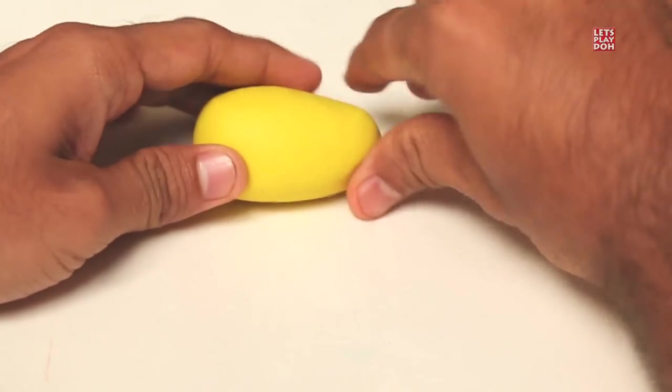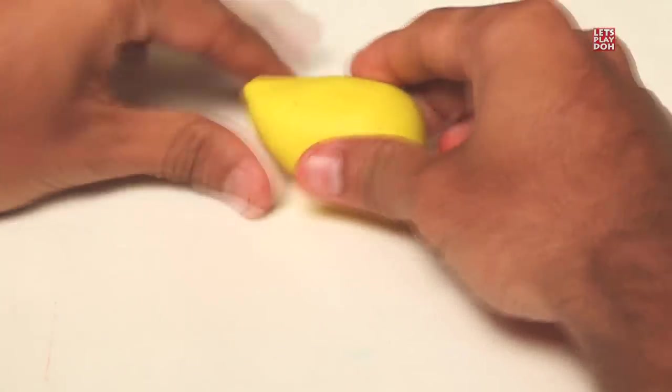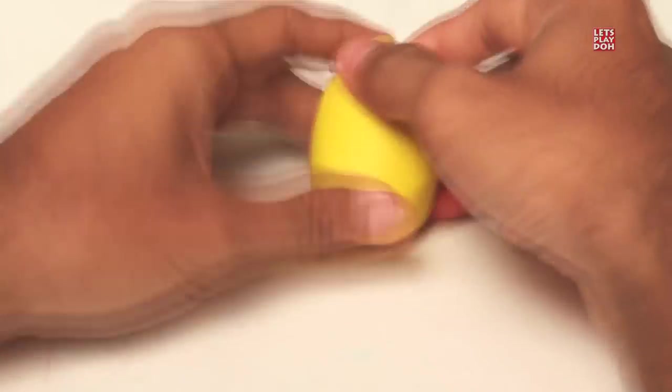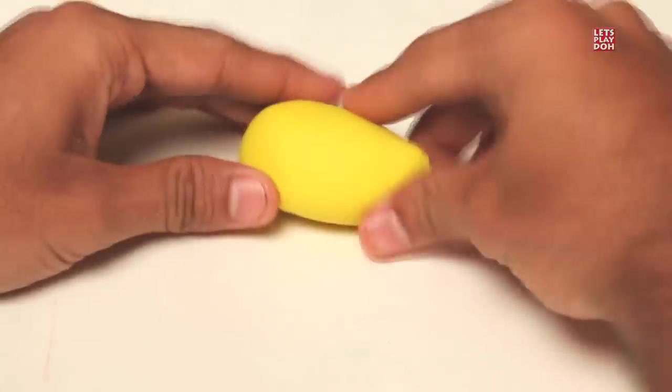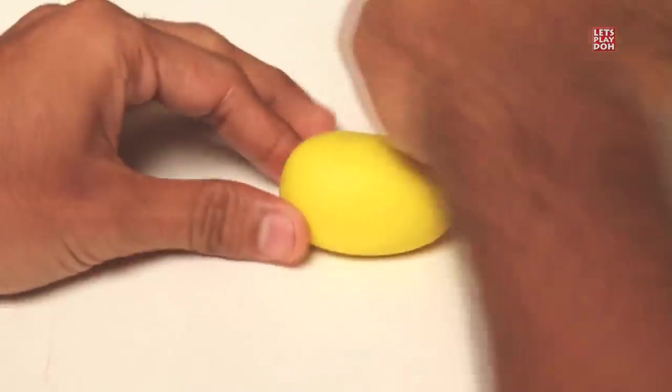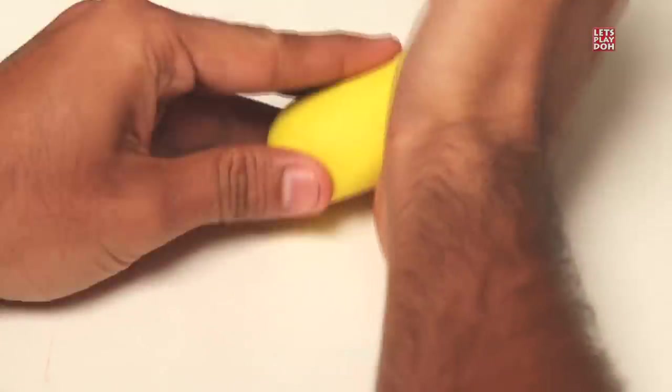Just use your fingers so that that part kind of sticks up even a little bit. It should come down in front. If in the back, you can just tuck it up a little bit. You see how in front, the yellow play-doh comes just to the ground, to the floor, to the surface.